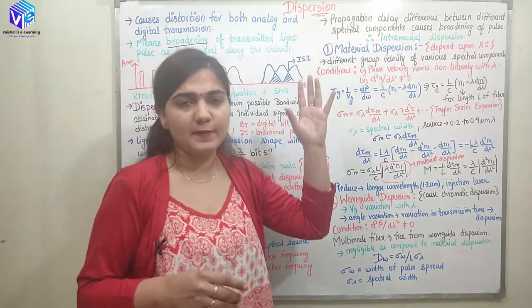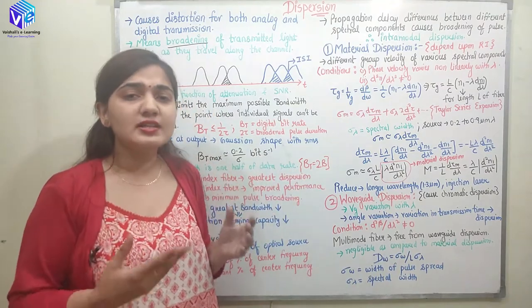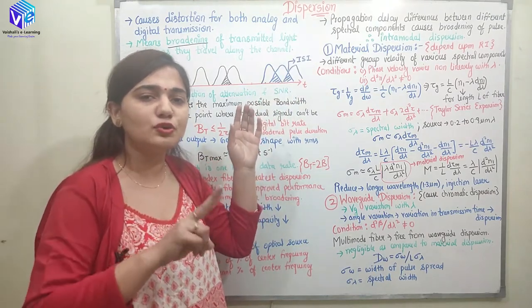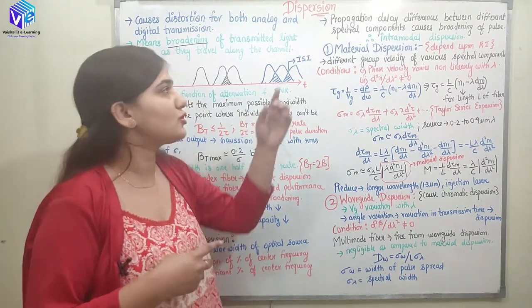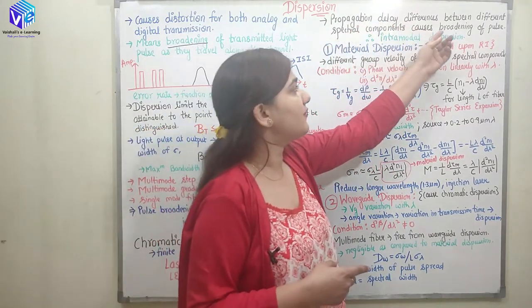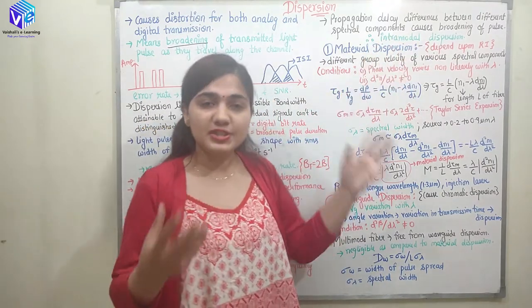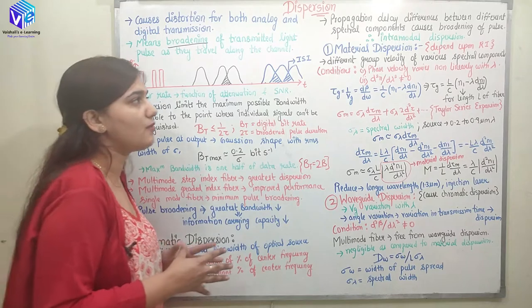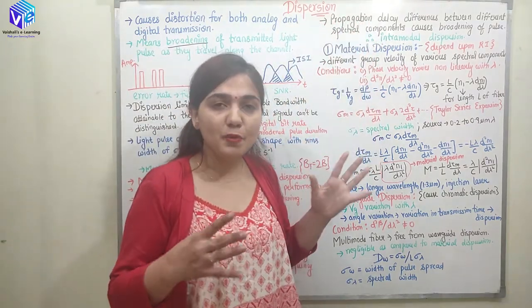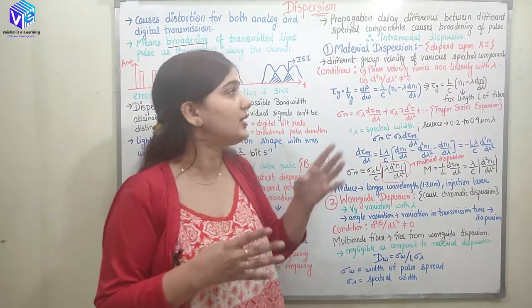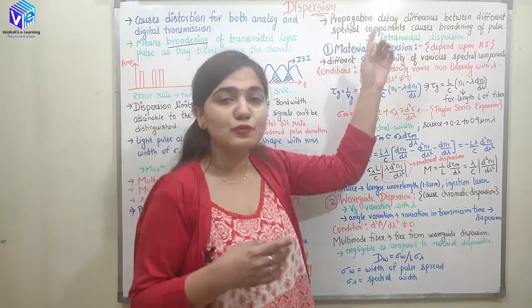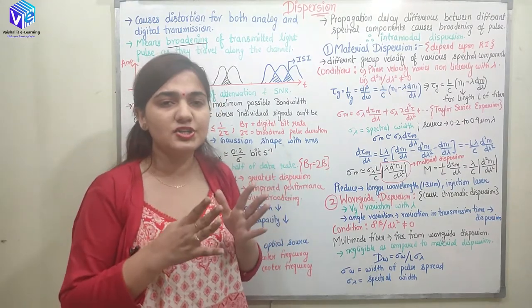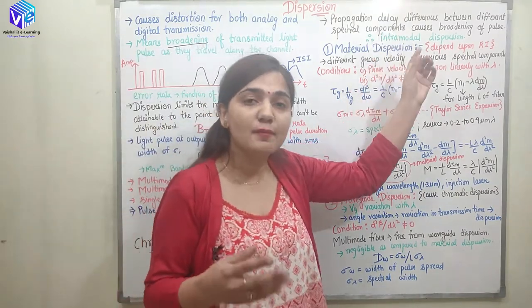There is a propagation delay because signals with different frequency propagate at different rates. The propagation delay difference is between the different spectral components present. In LED, there are more spectral components, so more propagation delay. In lasers, there are fewer spectral components, so lesser propagation delay. This propagation delay difference between the different spectral components causes the broadening of the pulse — in turn producing dispersion. So in the laser there is lesser dispersion, and in the LED there is more dispersion. This is called intramodal dispersion.